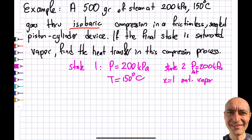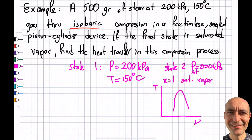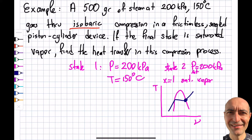On a T-V diagram, constant pressure lines look like this. State 2 is right at the saturated vapor curve — that is what x = 1 means: 0% saturated liquid and 100% saturated vapor. This process is at 200 kilopascals.